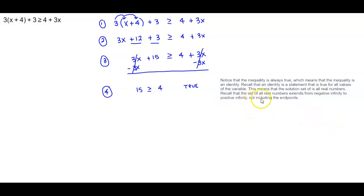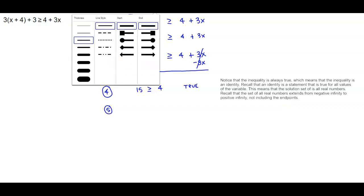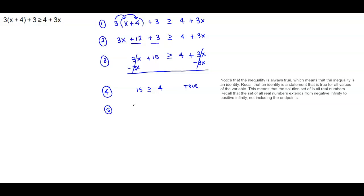And therefore, recall that the set of all real numbers extends from negative infinity to positive infinity and not including the endpoints. So we'll just graph this real quick because when we talk about all real numbers, this is what the graph looks like. We're going from negative infinity to positive infinity. And when we say all real numbers, that means we're including everything on the number line.